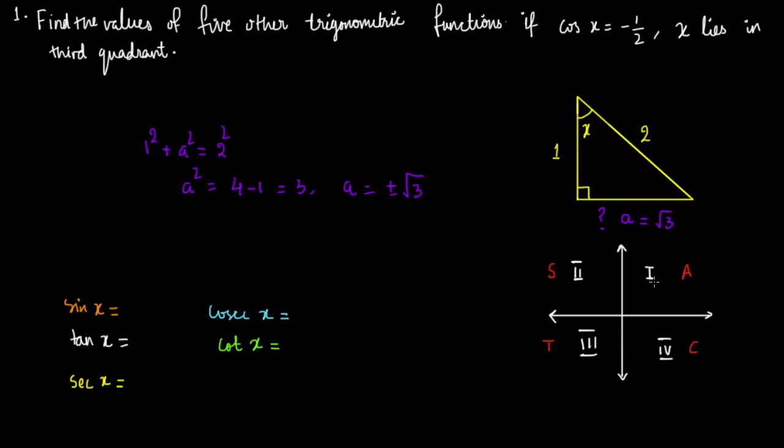So this is the first quadrant, second quadrant, third quadrant, and fourth quadrant. A stands for all, that means all the functions are positive when the angle is in the first quadrant. S for sine, and consequently cosec x is positive when the angle is in the second quadrant.